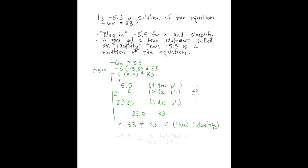From this, we can conclude that -5.5 is indeed a solution of the equation -6x equals 33. So let's write that. -5.5 is a solution of -6x equals 33. And that's how it solves our problem. Thank you for listening.